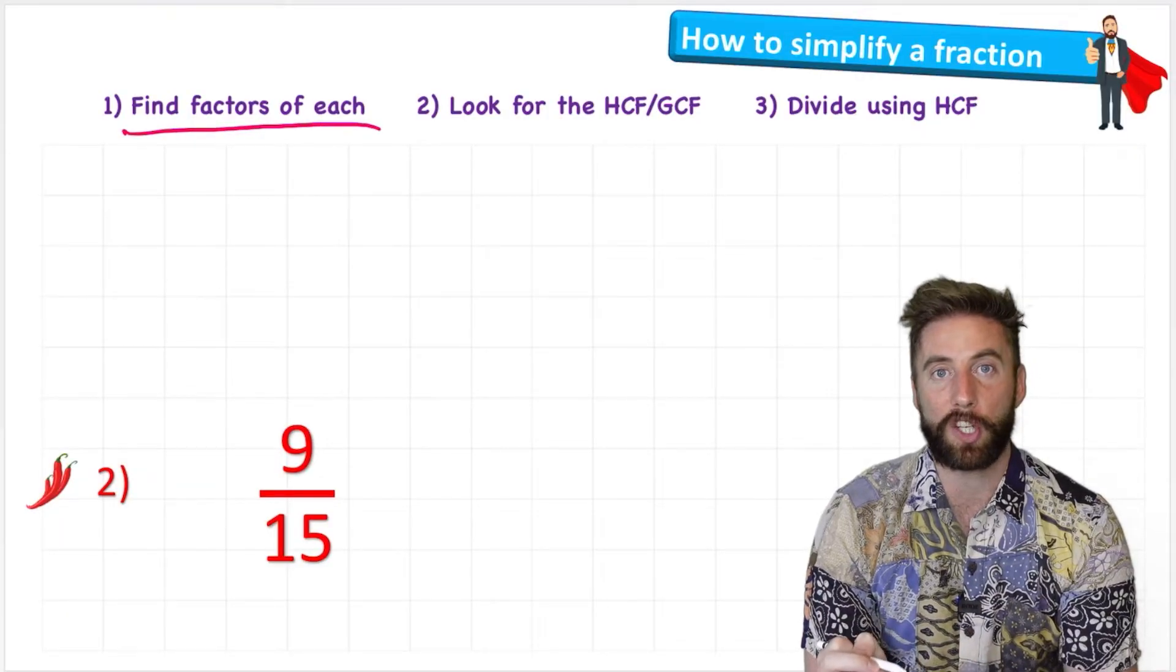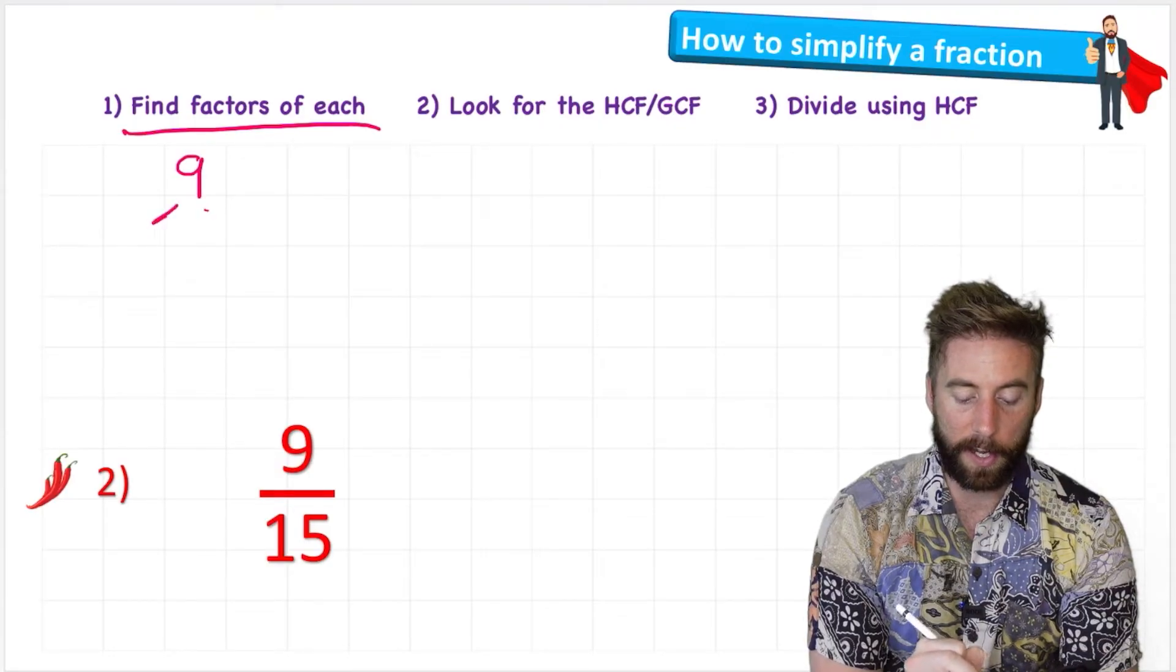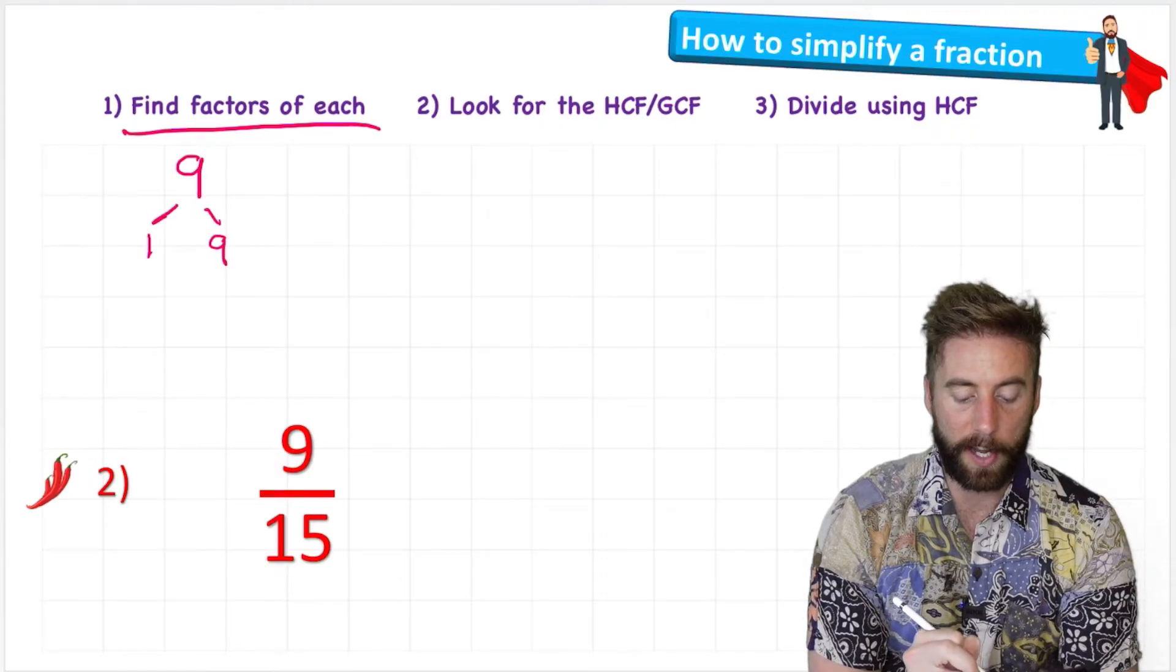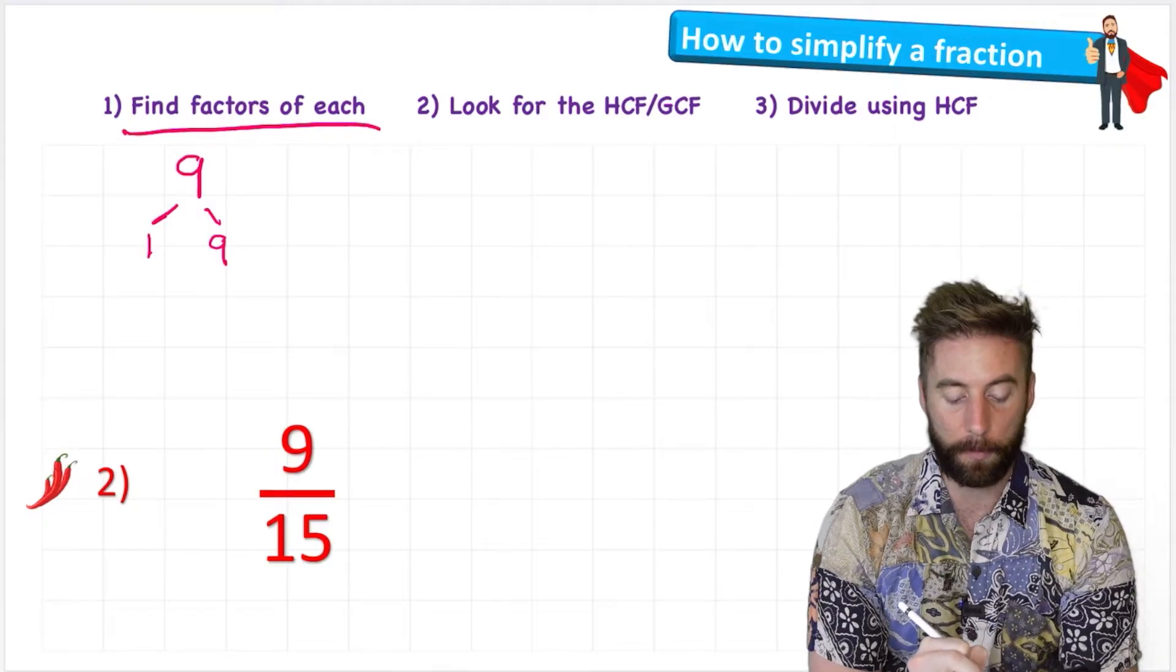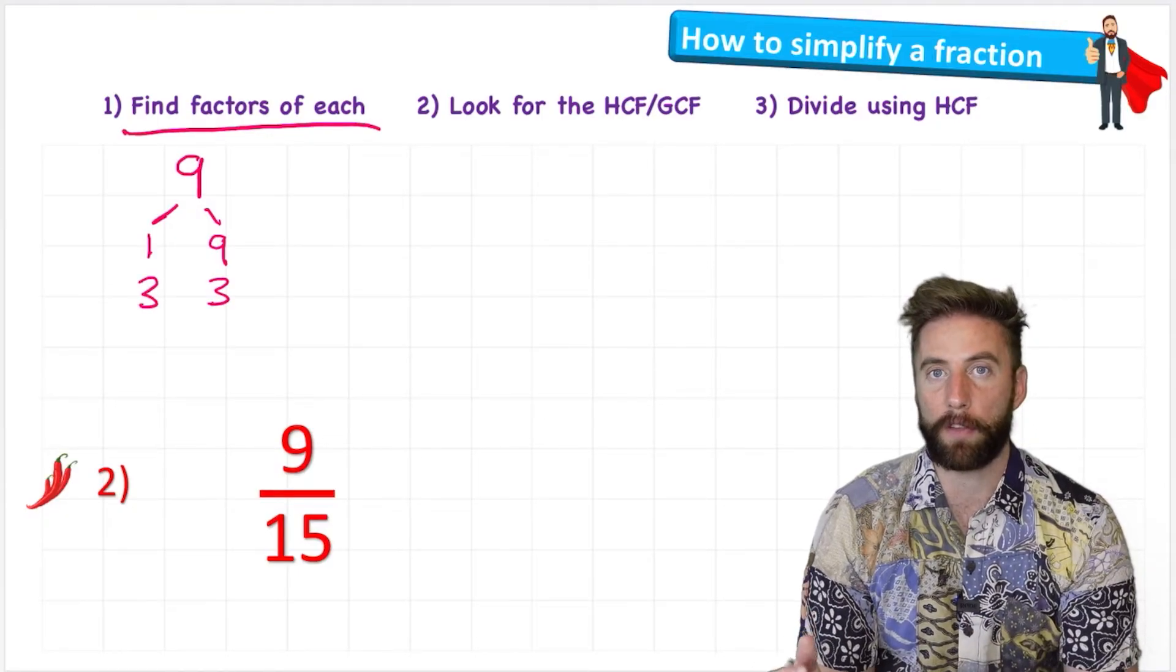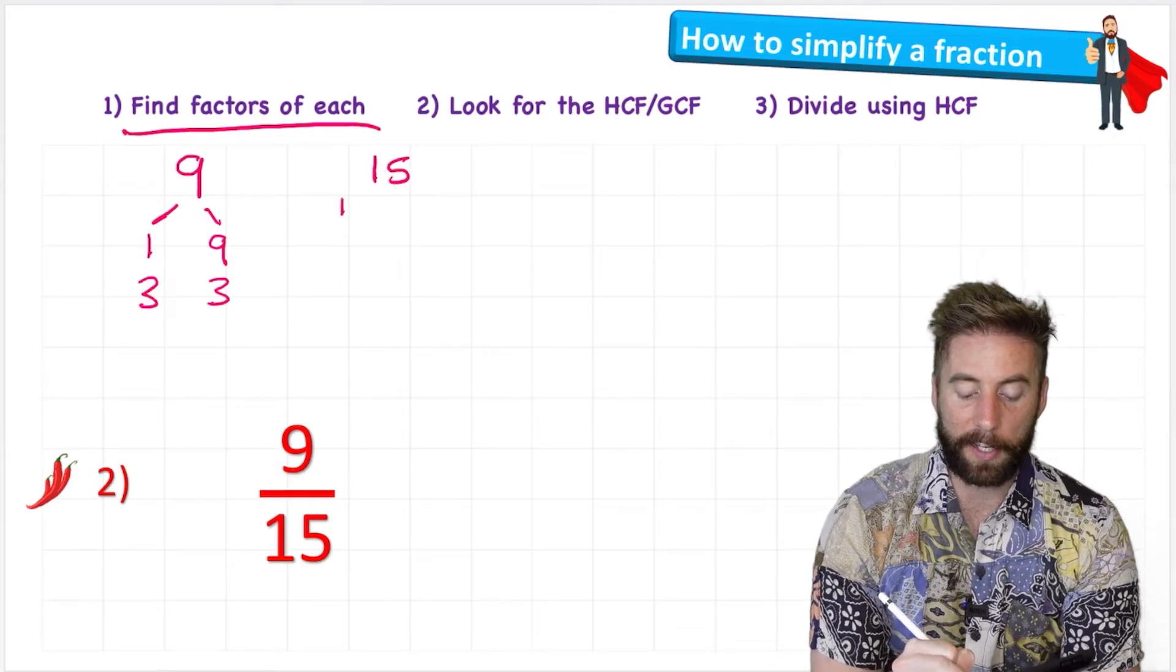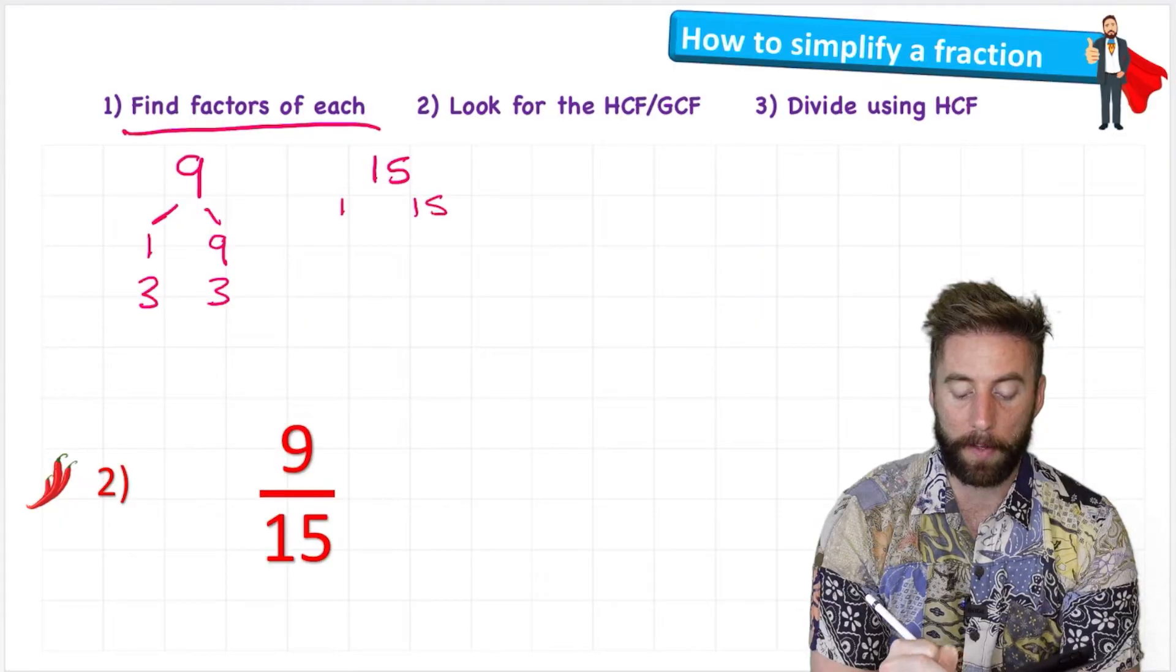So let's start with our nine. Nine's factors are one and nine. Two doesn't work because it's an odd number, but I can do three times three. And they are the only factors of nine. Now I can get my 15 and again start logically: one multiplied by 15.